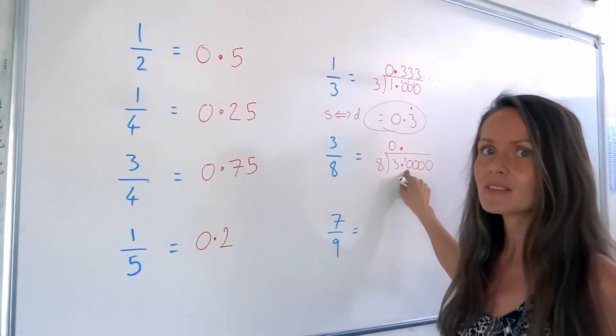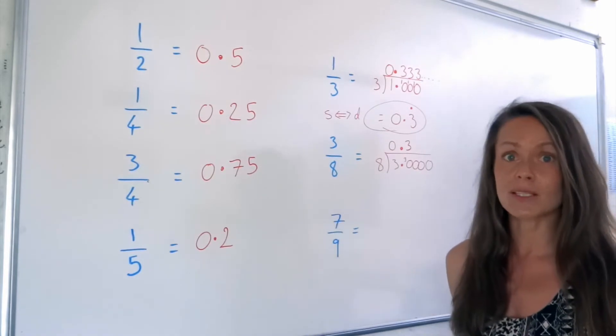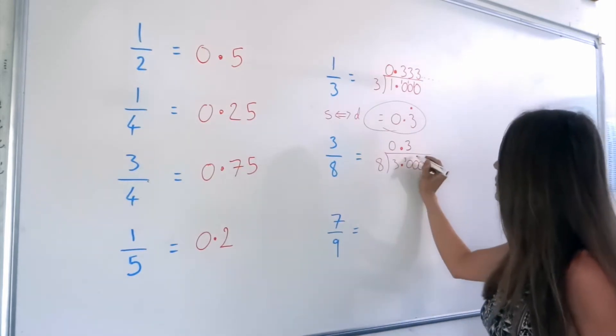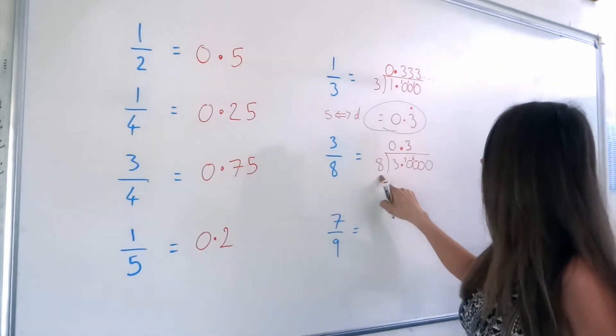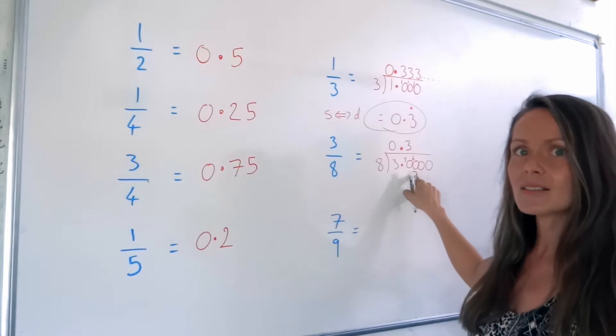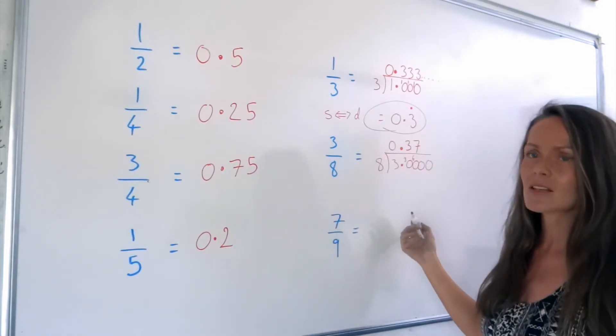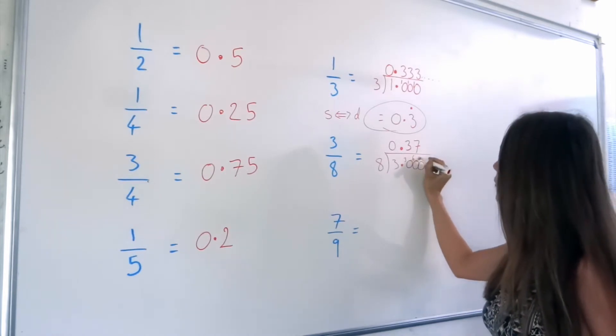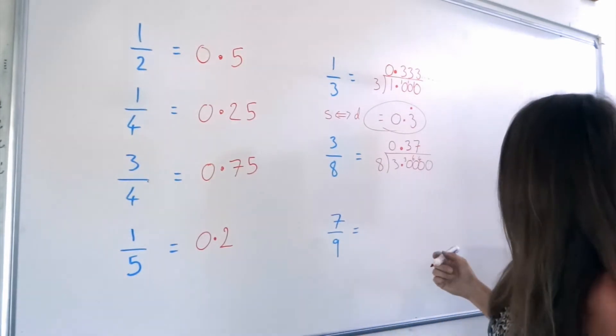How many 8's in 30? Well, there are 3. And 3 times 8 is 24, so we've got a remainder of 6. The next question. How many 8's in 60? Well, there are 7. Because 7 times 8 is 56, so we have a remainder of 4. Notice how you really do need to know your times tables to be good at these questions.